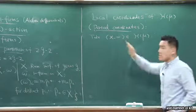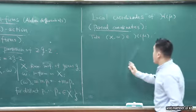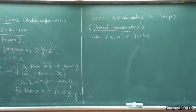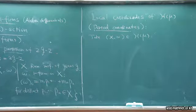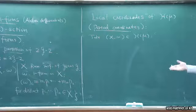Suppose we are given this specific point in H_μ. So X is a Riemann surface of genus g, and omega is a one-form with n zeros.